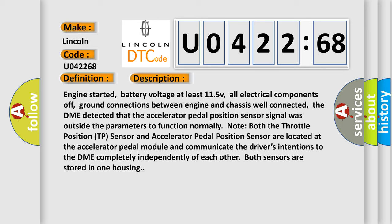Note both the throttle position TP sensor and accelerator pedal position sensor are located at the accelerator pedal module and communicate the driver's intentions to the DME completely independently of each other. Both sensors are stored in one housing.